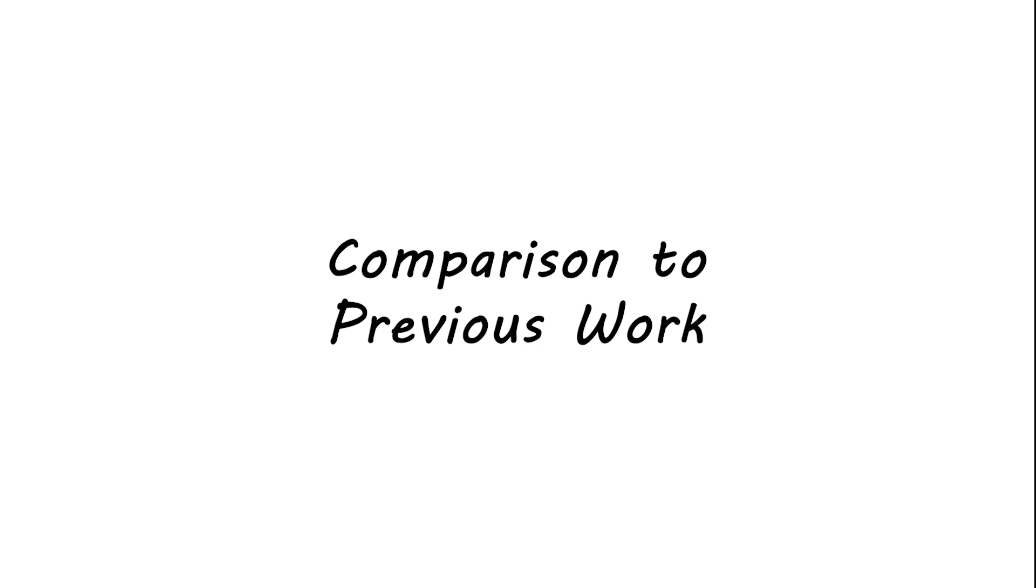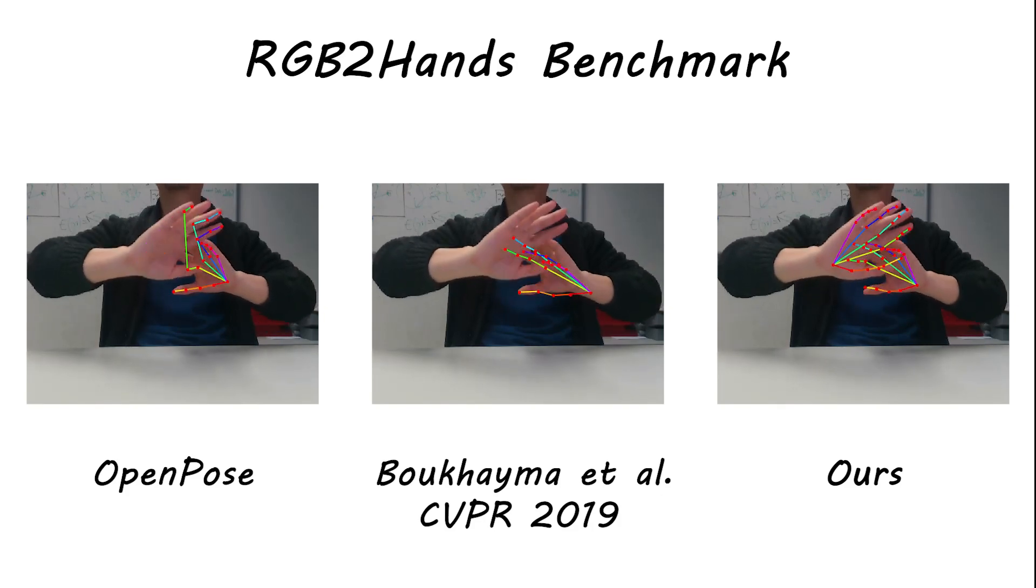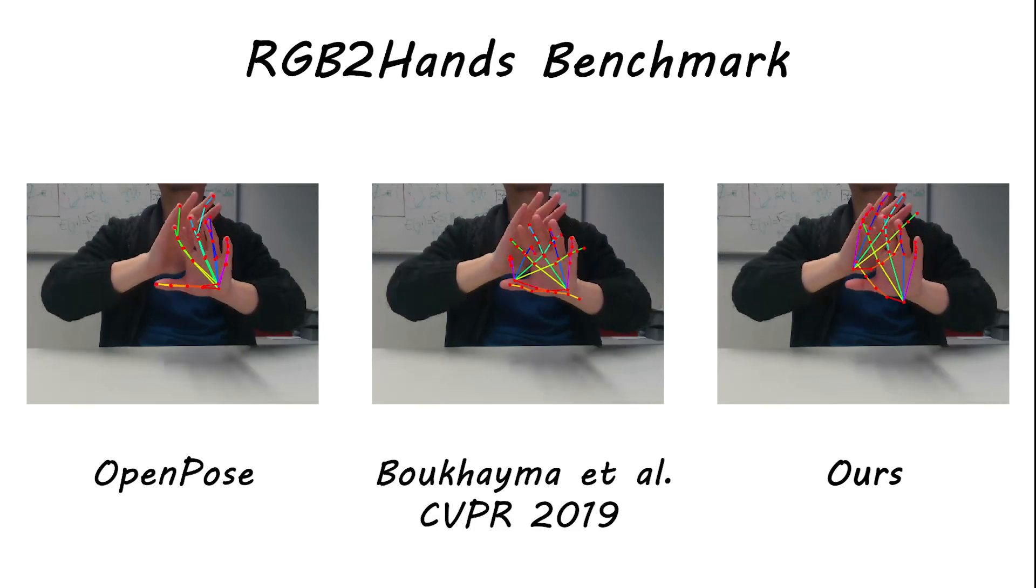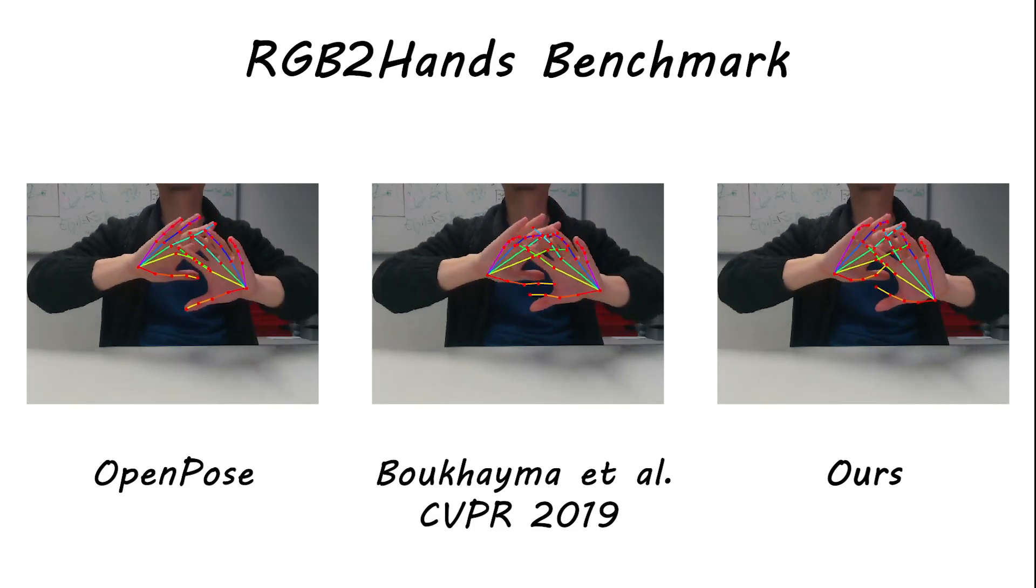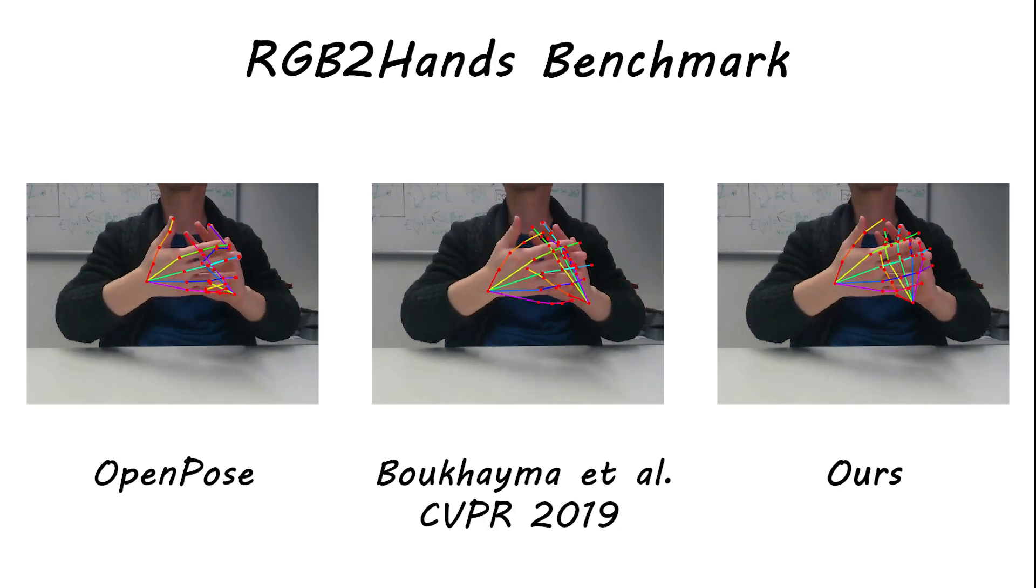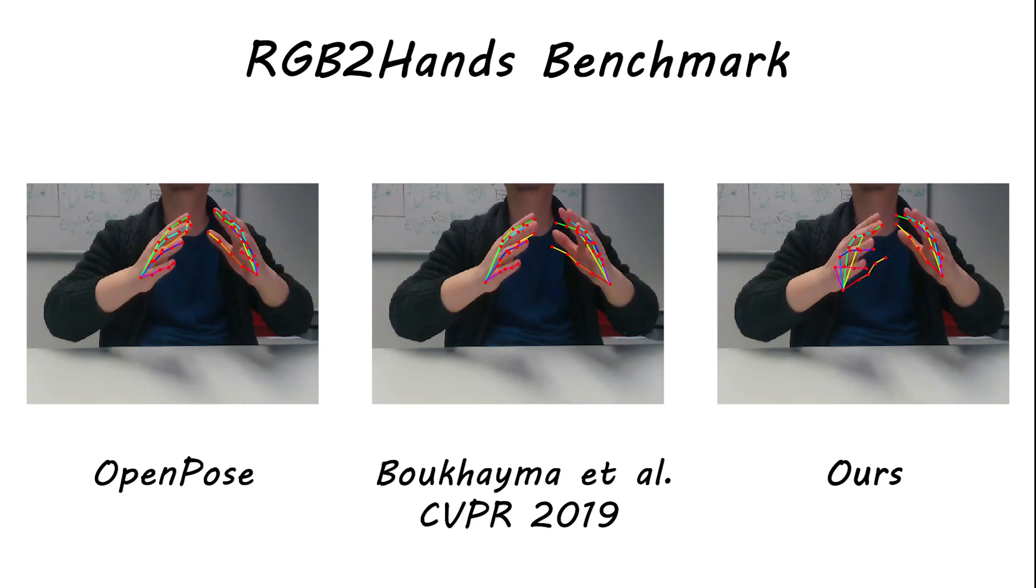We compare our approach to the crop-based RGB-only methods OpenPose and a method by Bukhaimai et al. Note that for compatibility to the 2D OpenPose predictions, we only show skeletons for all methods. In the case of strongly overlapping hands, our method significantly outperforms the other two methods, as ours is able to predict more accurate and plausible hand poses while at the same time being much faster.